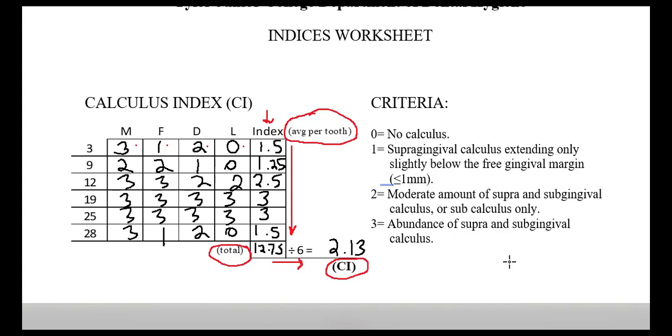Also, you can tell if, for instance, if my calculus index had been 0.5, look how many threes and twos I have over here. We're trying to get an average for the whole mouth, so it should really reflect your patient's condition based on the criteria.